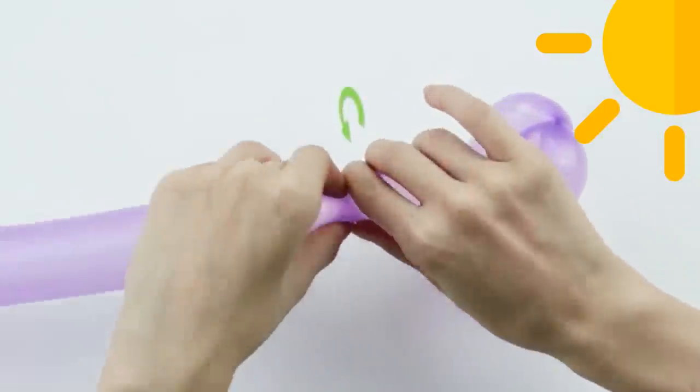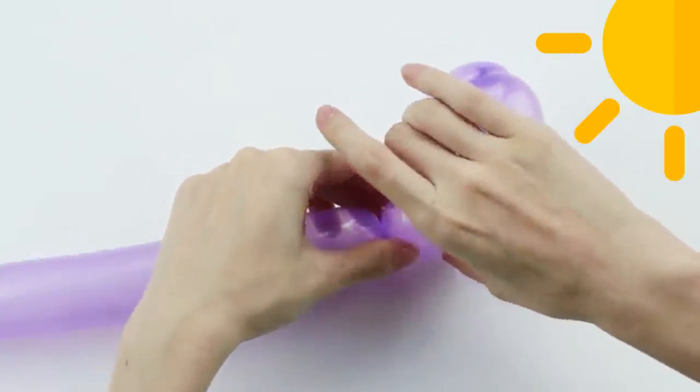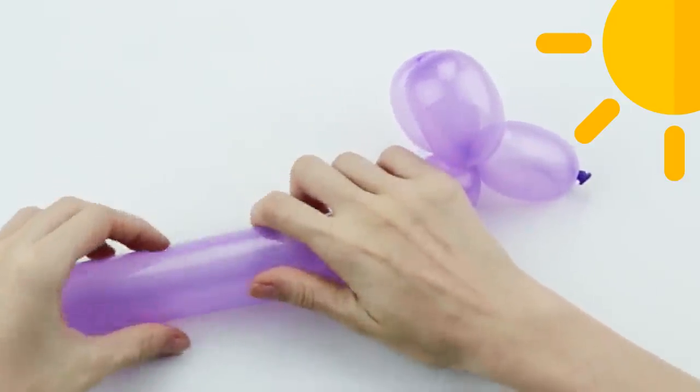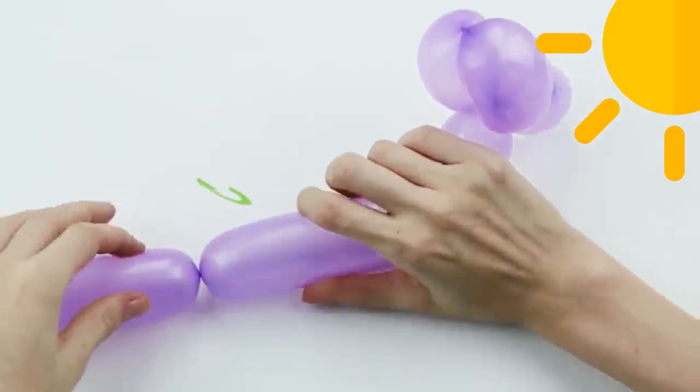Make 3 more basic twists. Make the first twist a few inches below the head to form a neck segment. Make 2 more twists below the neck to create 2 segments that are equal in length, these will be the front legs.